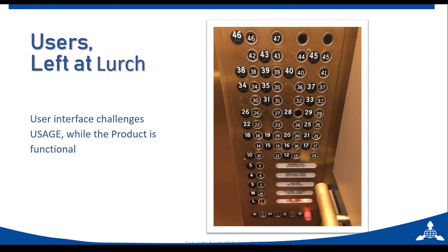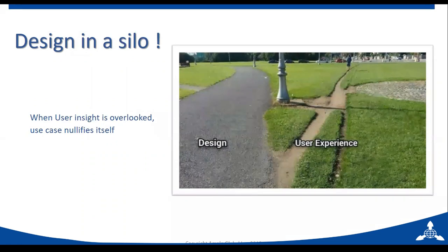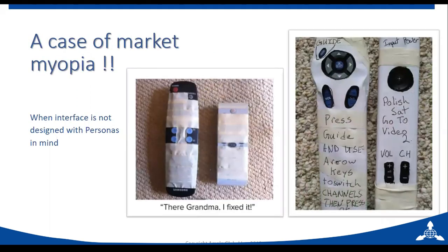The first example is a functional board, but it poses a serious user challenge — it's functional but confusing to use. Imagine transplanting this to a pivotal persona on a factory floor and how that could reduce operational efficiencies. Next, a simple keyboard where the arrows have been placed to impede usage — being thoughtful really is important aside from functionality to deliver that experience. Then there's design in a silo — civic experiences where user insight is totally overlooked. User experience is one thing; the design is something completely different. And finally, a case of market myopia — a lost market opportunity, possibly from lack of market segmentation or inability to spot an opportunity, such as redesigning an accessory as simple as a remote.